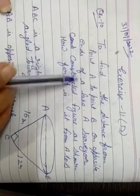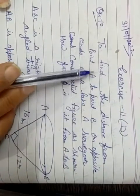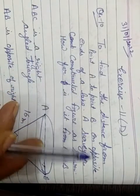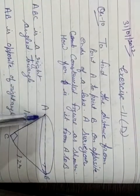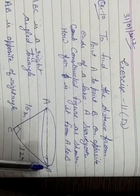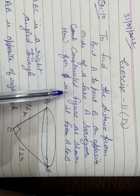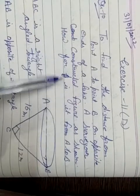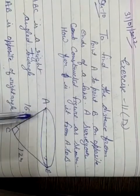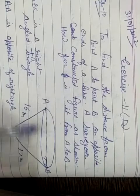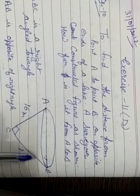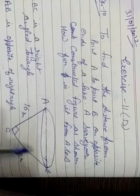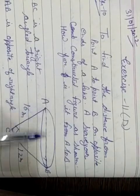Let's start question number 10 of exercise 11D. To find the distance from point A to point B on opposite ends of a lake, a surveyor constructed a figure as shown. How far is it from A to B? It's a lake, here's the diagram figure. It is a right-angle triangle.